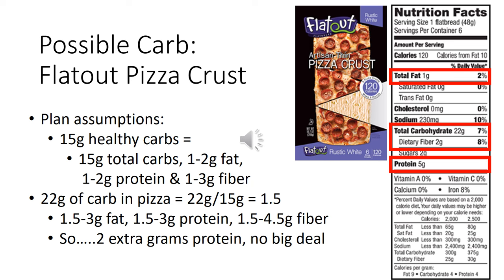Looking at this pizza crust, we go to carbs first: it has 22 grams of carbs. We take 22 divided by 15 — that's 1.5 servings of healthy carbs. So this pizza crust can have up to three grams of fat, up to three grams of protein, and up to 4.5 grams of fiber. Looking at the nutritional facts, it only has one gram of fat — within range. Dietary fiber is two grams — totally within range. Protein is five grams, which is two grams over, but that's only eight extra calories, so no big deal. You can count this as your healthy carb.